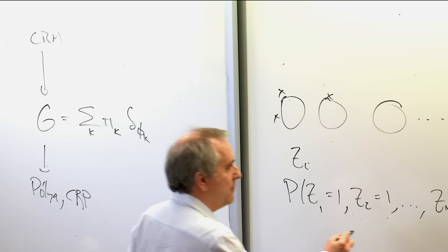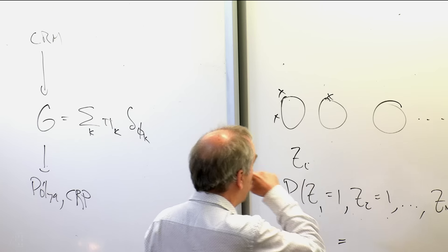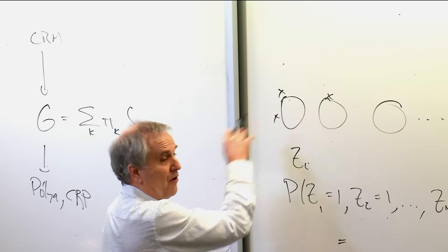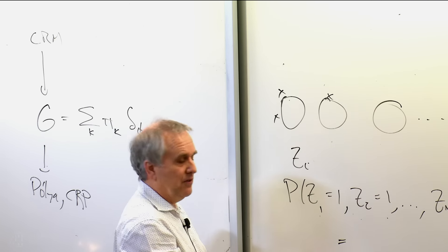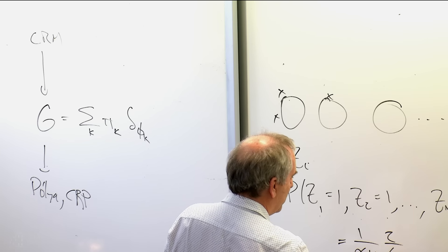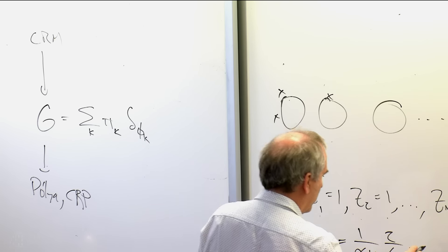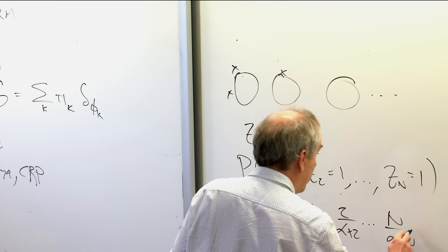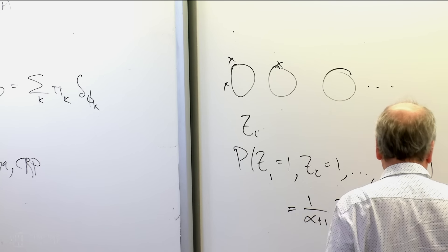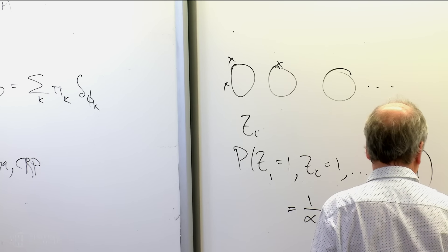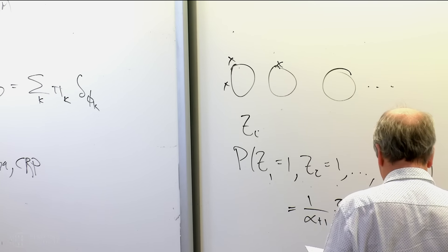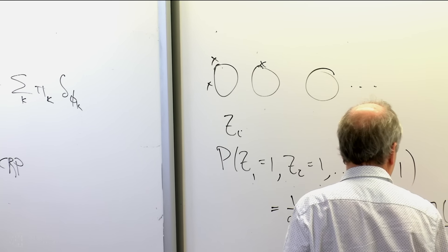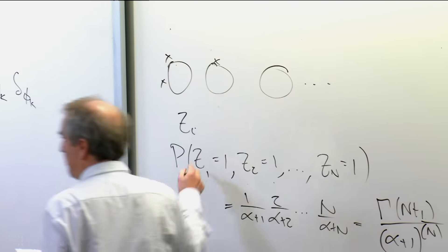By our earlier calculations: Z_1 sits there with probability proportional to 1 because there's already one person sitting there, the initial person. Then it's 1 over α+1, then 2 over α+2, and so on up to n over α+n. You don't have to know a lot of combinatorics to see that the numerator is Γ(n+1), and downstairs is just the increasing factorial — the Pochhammer symbol. There's a little formula for that particular probability.